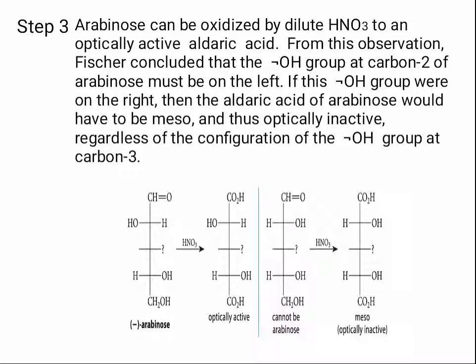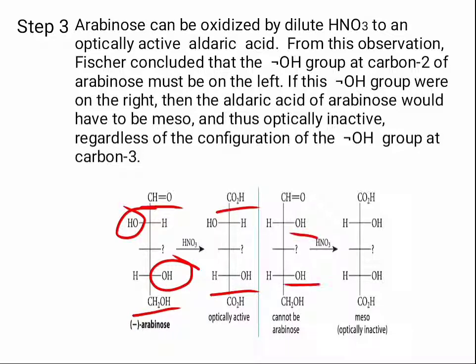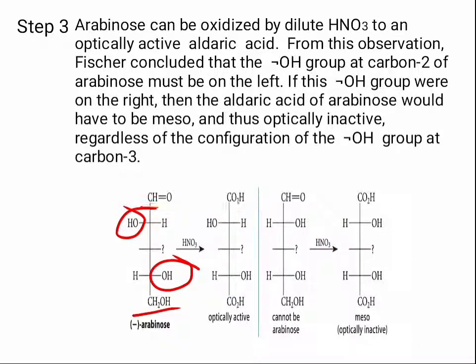The experiment shows that oxidizing arabinose gives an optically active compound. So Fischer understood that this OH must be on the left, because if you oxidize the CH2OH end, the CHO group is converted into COOH. If these two OH groups are on the same side, you get a meso compound due to the plane of symmetry. But since the product is optically active, this OH is on the right and this OH is on the left.